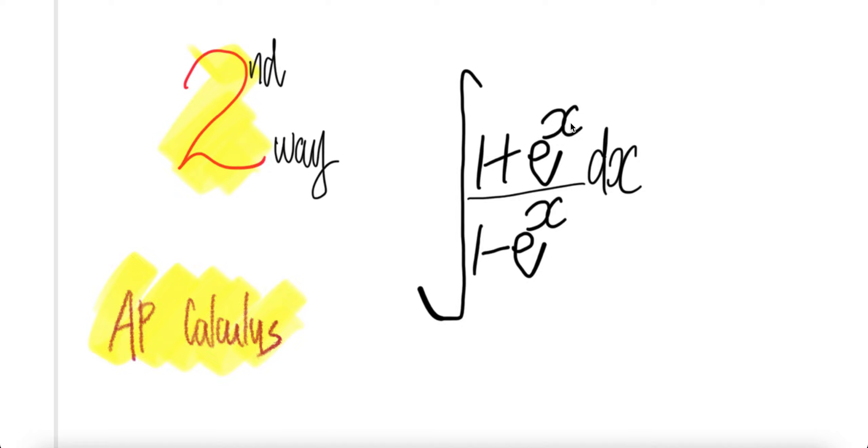Integral 1 plus e to the power x divided by 1 minus e to the power x dx. Second way to get this integral, AP calculus.